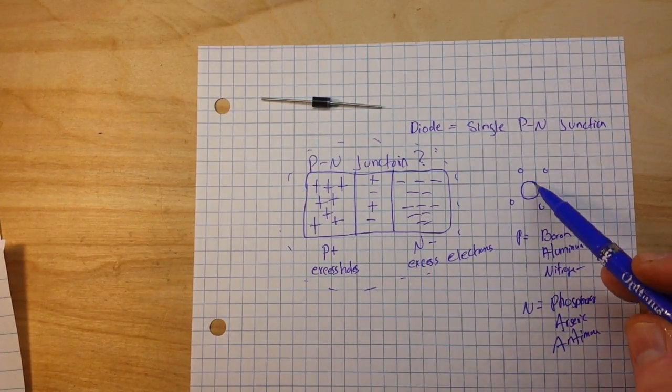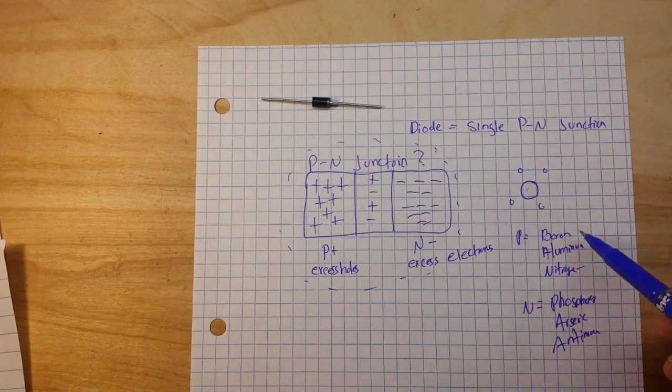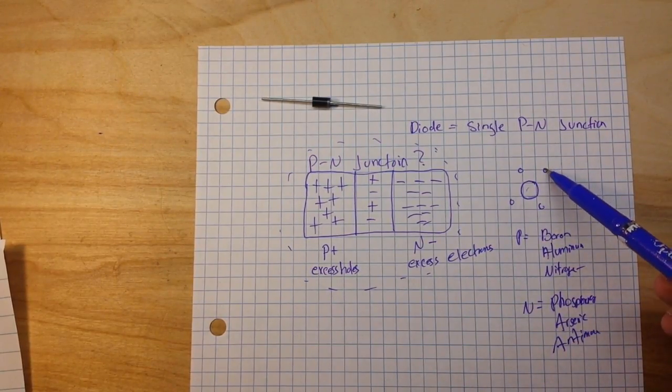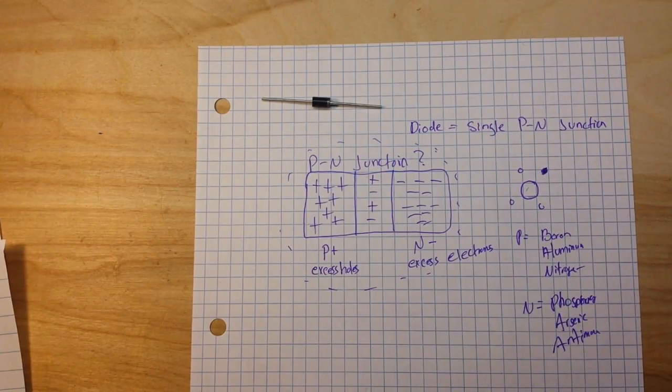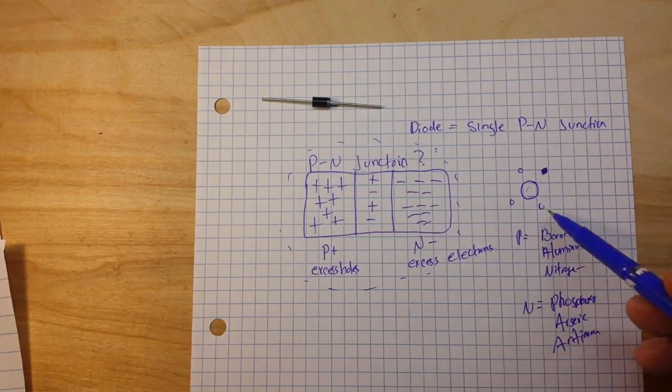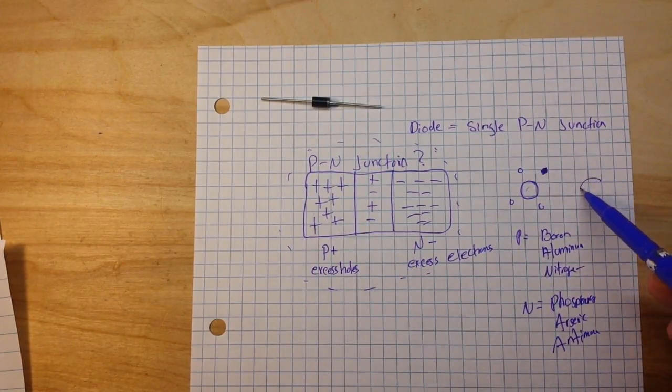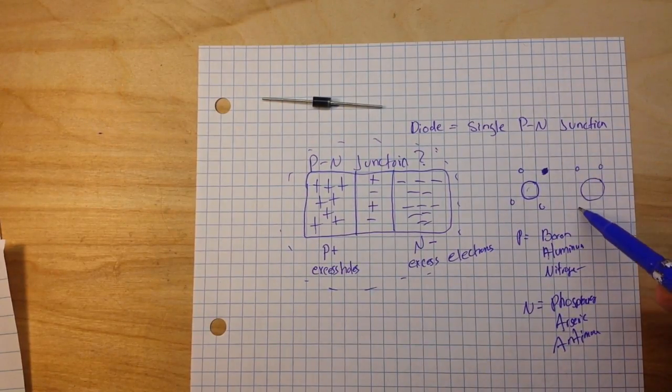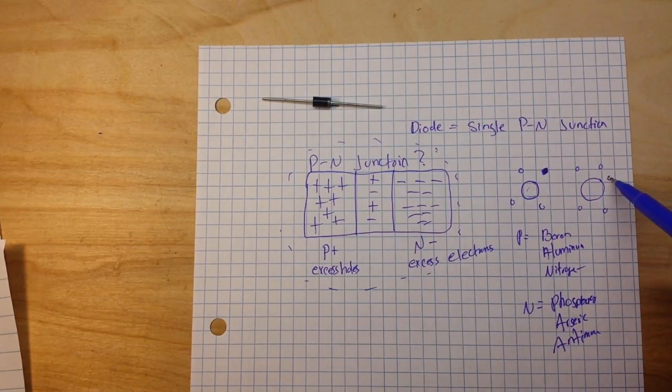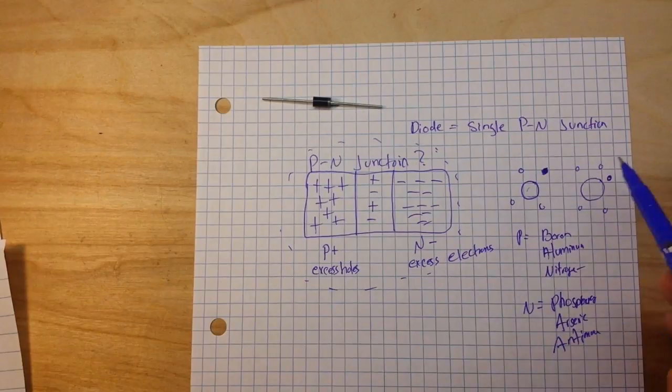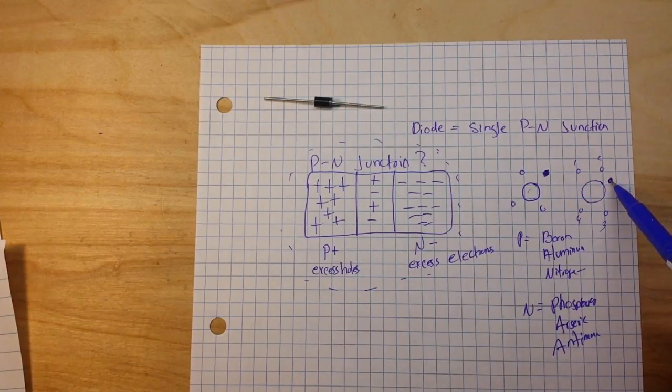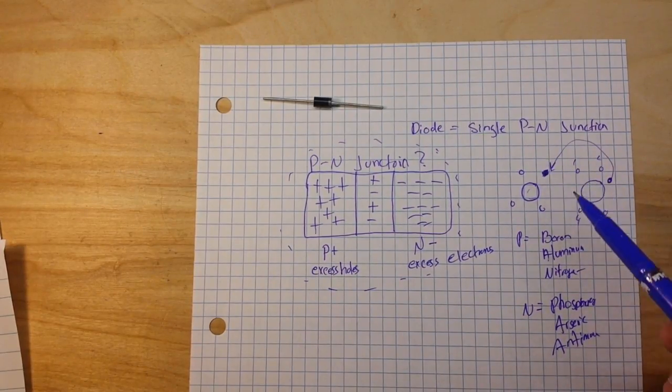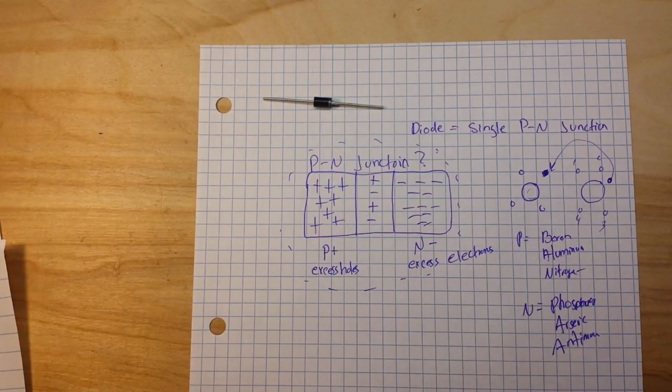And when we dope our silicon atom with the boron, it creates a hole where that electron used to be. So now it wants an extra electron. And then if we dope our silicon with the phosphorus, it creates an excess electron. But the silicon is happy with four electrons. So this one is going to cross over to that excess hole.